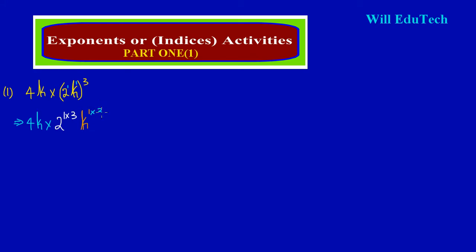So essentially what we have left over here: we have 4k, and that is being multiplied by base 2. I'm simply going to multiply all my powers — 1 times 3, that's a 3 — so this is base 2 raised to the third power, times my k, and that's also 1 times 3 which gives me a 3.